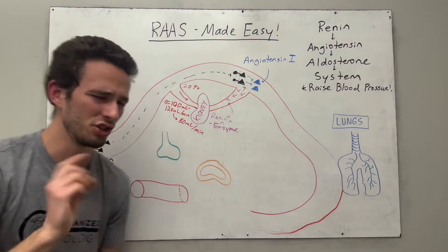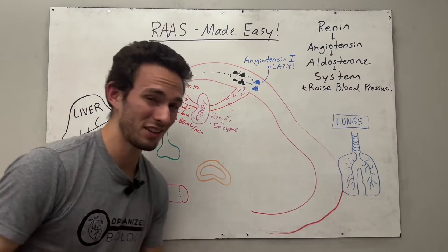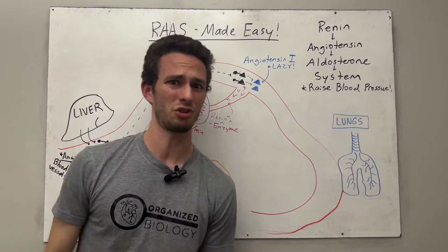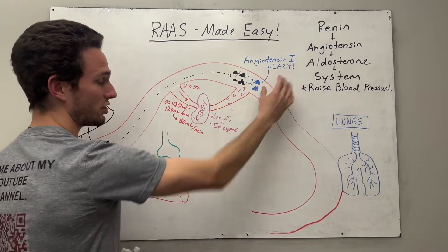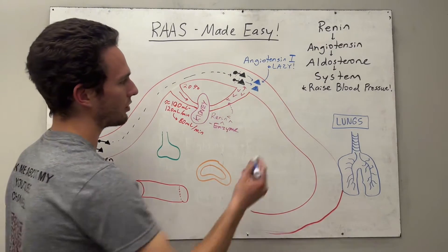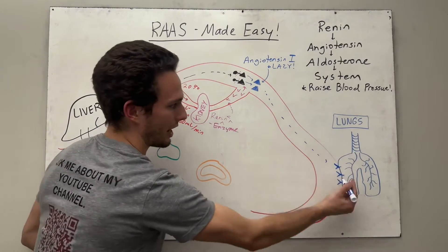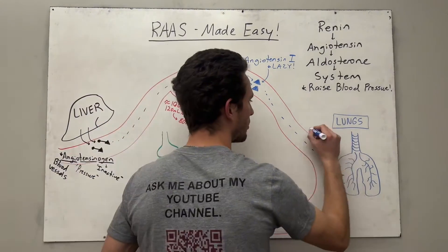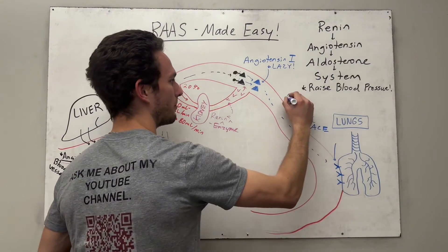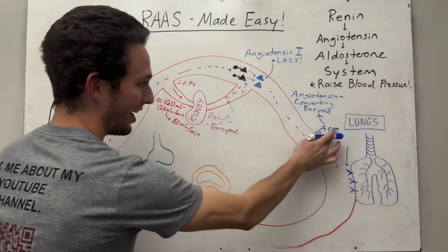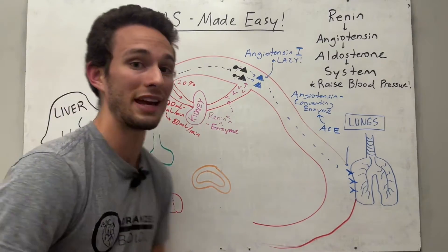Here's the thing with angiotensin 1 — just like angiotensinogen, it is a lazy piece of crap. It really doesn't do a whole lot; it has no physiological value. So we need to activate it. After renin cleaves angiotensinogen and creates angiotensin 1, that molecule will travel down to the lungs. The lungs have enzymes on the outside of the cells called ACE — angiotensin converting enzyme. With the help of ACE, we actually activate angiotensin 1 and turn it into angiotensin 2.